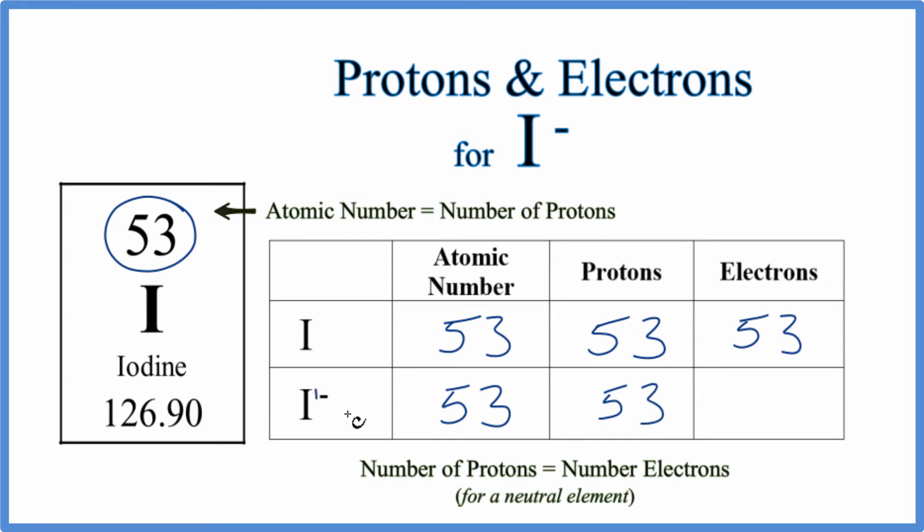But for the electrons, think of it this way: there's a one in front of this negative sign, we don't write it but it's there. The negative sign represents an electron. Electrons are negative, so we have one electron. We just add one electron to the 53, which gives us a total of 54 electrons for the iodide ion.